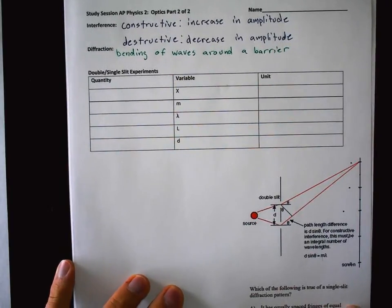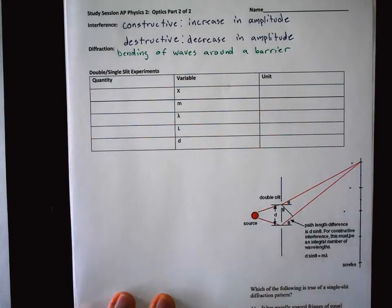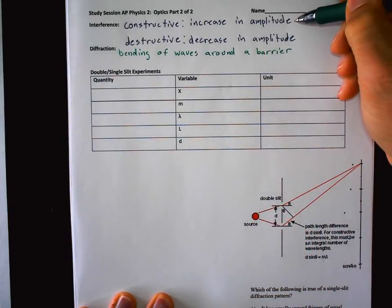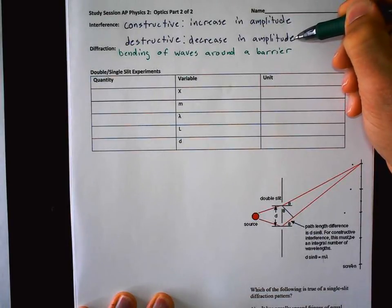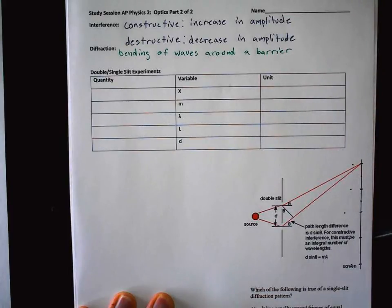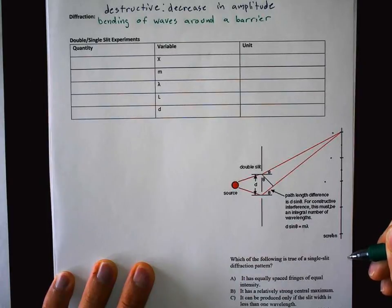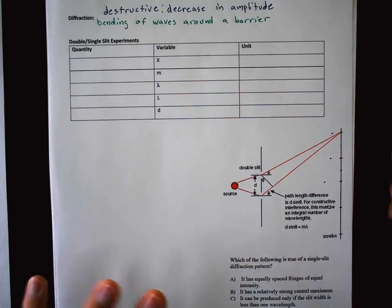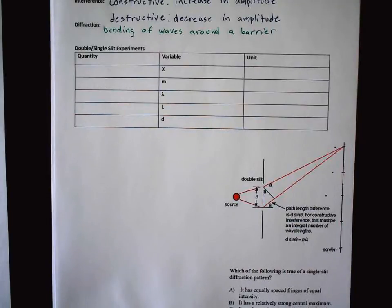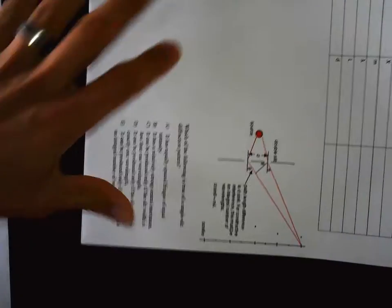Sound and water waves do this too, by the way. In the area beyond the slits, you get places where there's constructive interference and places where there's destructive interference. A screen is usually placed at the back of the experiment to see these constructive and destructive spots. In class we do labs where we shine light through different barriers, and it's pretty cool to see the diffraction pattern on the back wall or screen.